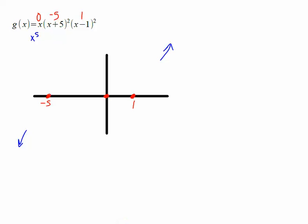Exponents. Well, notice that we've got an exponent of two, and we also have another exponent of two. So it's going to bounce off at each of those locations.